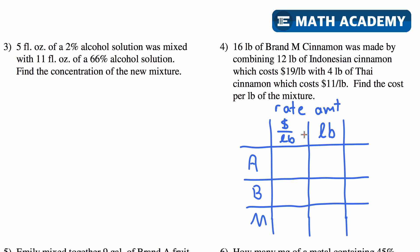Sometimes you might get a mixture problem that involves rates instead of percentages — for example, dollars per pound and the number of pounds. The one change you make is: instead of percent and whole, you have the rate and the amount. For this problem, cinnamon costs $19 per pound and there are 4 pounds of it. So I put 19 for the rate and 4 for the amount. Multiplying dollars per pound times pounds — the pounds cancel — giving dollars. 19 times 4 is 76, so there's $76 worth of cinnamon.